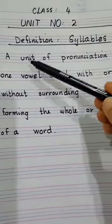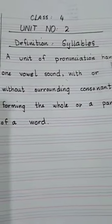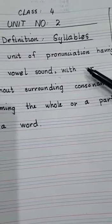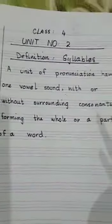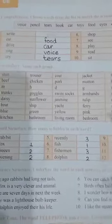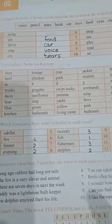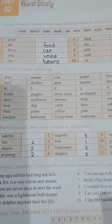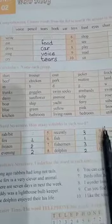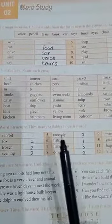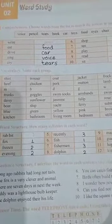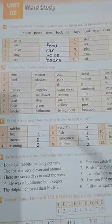Syllables are a unit of pronunciation having one vowel sound with or without surrounding consonants, forming the whole or a part of a word. Now I will explain it to you. A syllable is actually about how long the word is — we split it into pieces, and in each part it will have a vowel sound. Remember, not just the vowel letter, but every part will have the vowel sound.